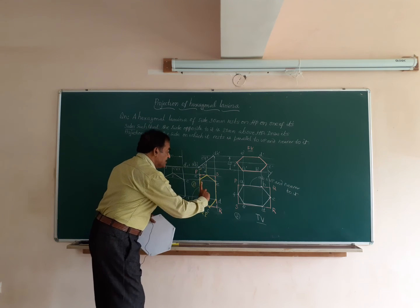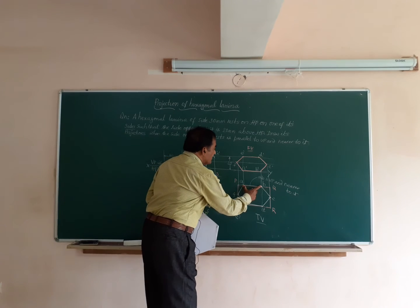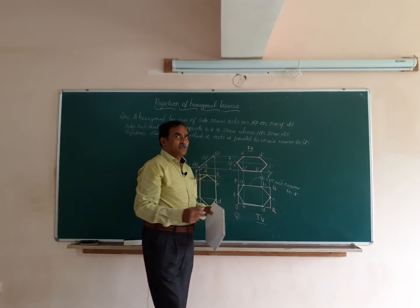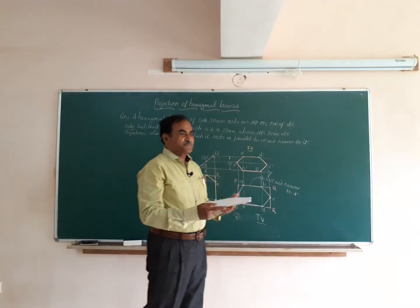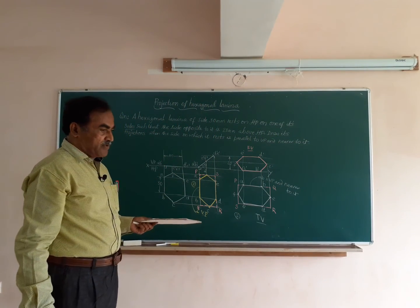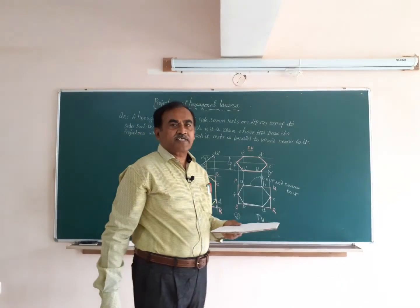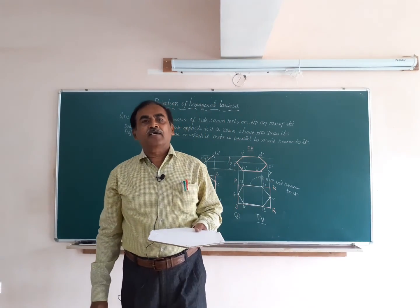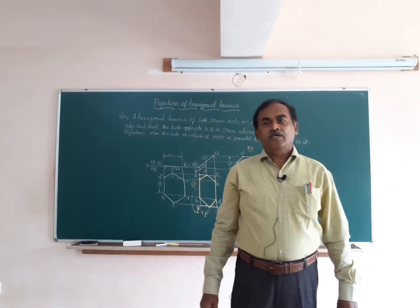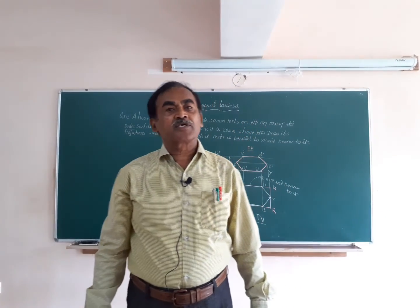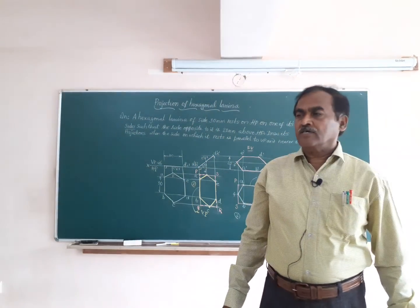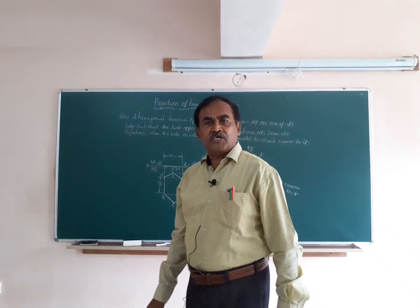Side AB on which it is resting measures 30 mm here, and the same 30 mm appears in the front view. So all sides A dash B dash, AB, ED, and E dash D dash measure 30 mm. I hope all of you have followed the explanation on this problem on hexagonal lamina. If you are happy with the presentation, please subscribe to my channel Mechanical Engineering Lecture Series, share with your friends, and thank you for watching. This is Dr. M.H. Channaya signing off.